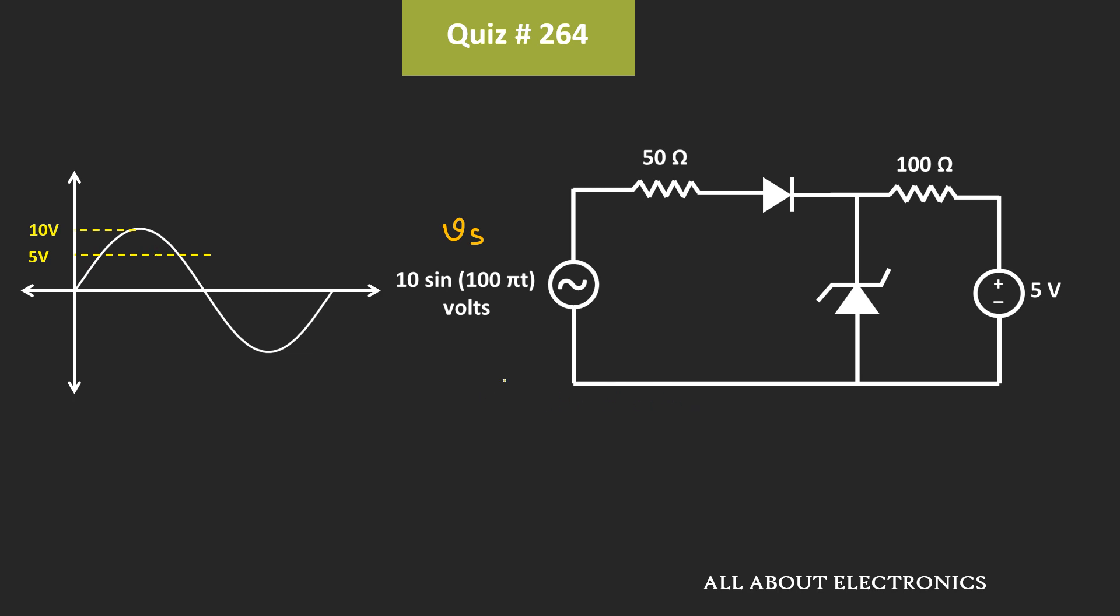First of all, let's analyze this circuit when this voltage source Vs is less than 0. During the negative half cycle, this normal diode will act as an open circuit. And in that case, this Zener diode will also remain open circuited, because the Zener voltage of the Zener diode is equal to 5V. That means it will turn on when the voltage across the Zener diode is greater than 5V. That means whenever the voltage Vs is less than 0V or during the negative half cycle, the current which is flowing through the 100 ohm resistor will be equal to 0.